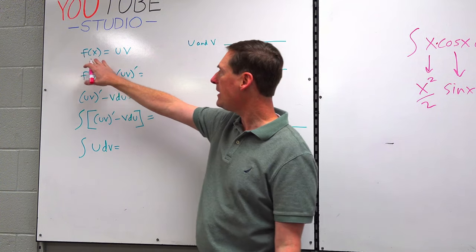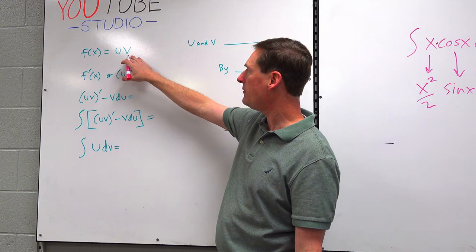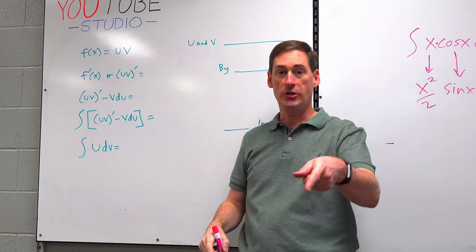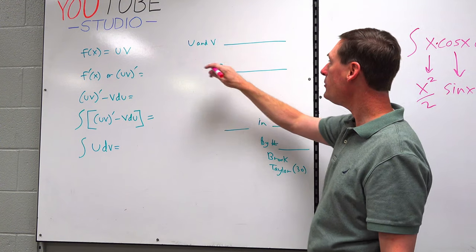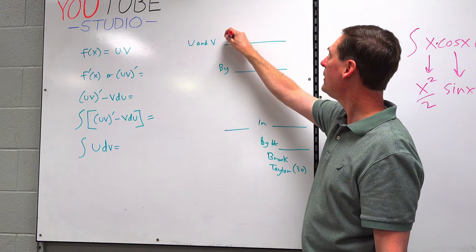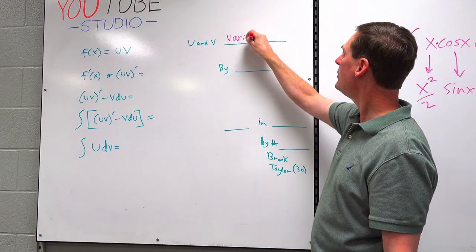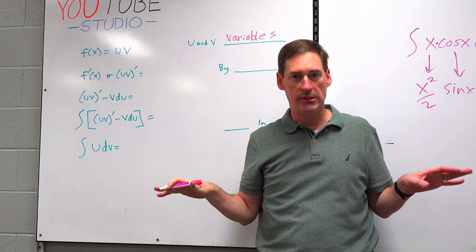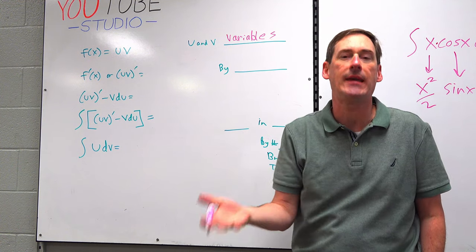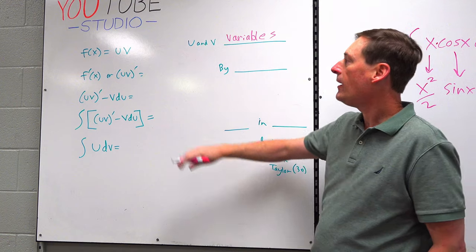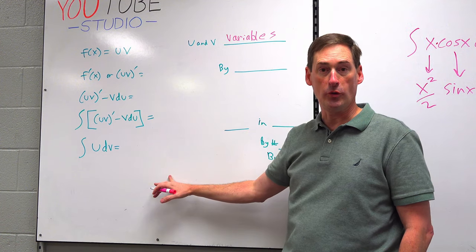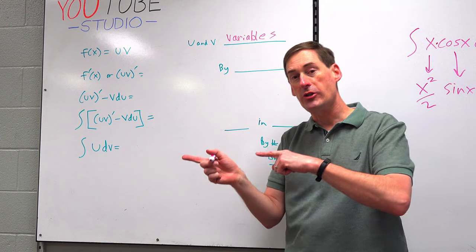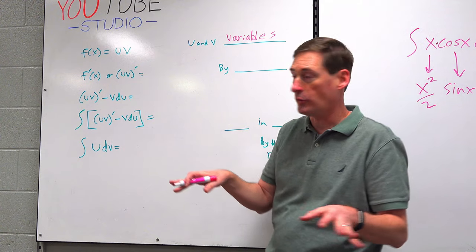Suppose that f of x equals u times v. Are these constants or variables? In the blank on your notes, we would put variables. Anytime you see u or v in any calculus class, that's considered to be a variable — it's just like x and y. Let's do the product rule, and then I want to show you how they discovered the reverse of what is roughly the product rule.